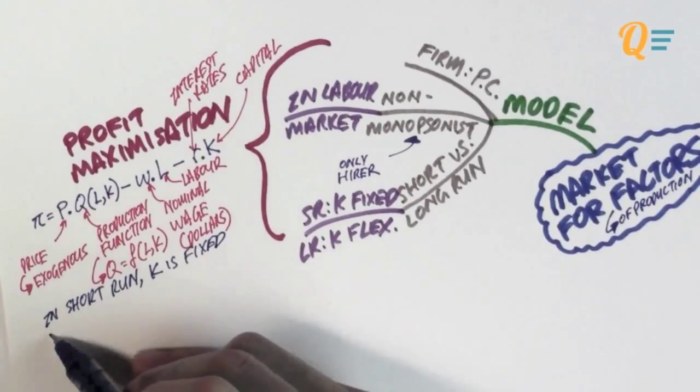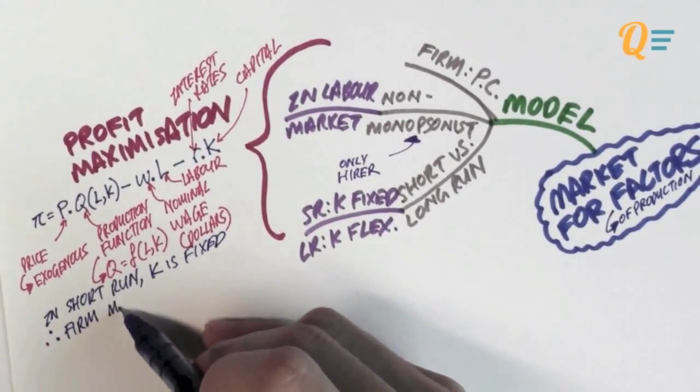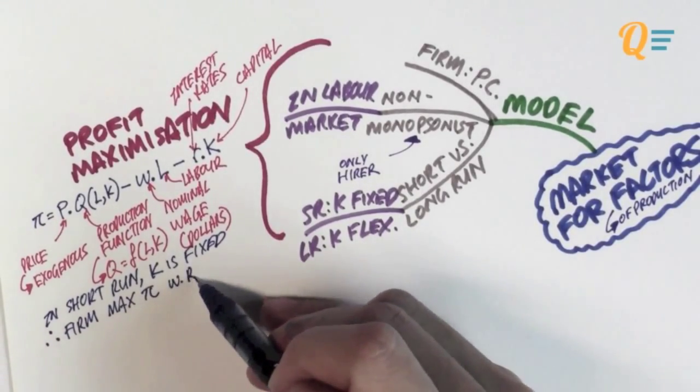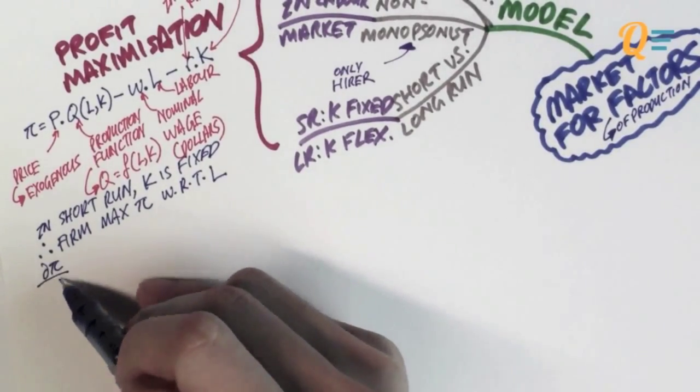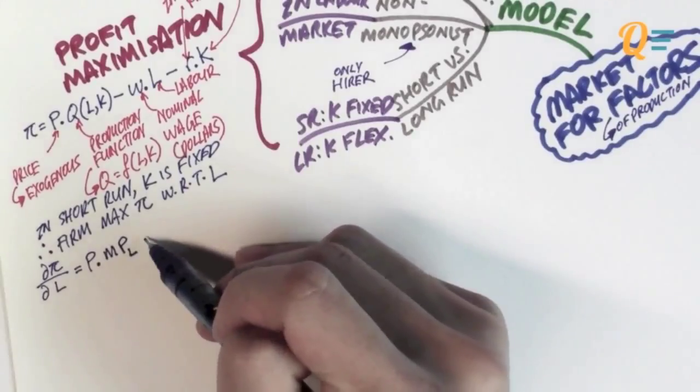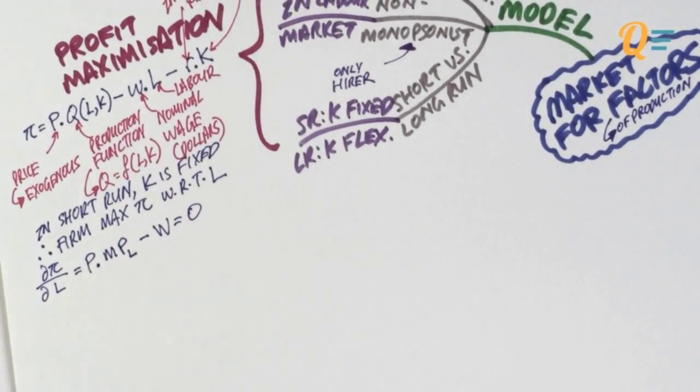In the short run, capital is fixed. Therefore, the firm would have to maximise its profit with respect to labour. Only labour. It can only choose the amount of labour in the short run. It can't choose how much capital it wants to have.